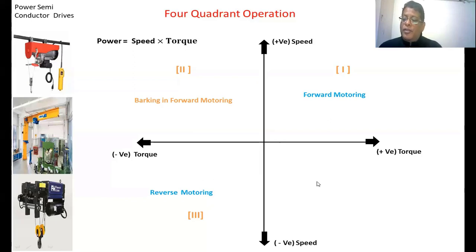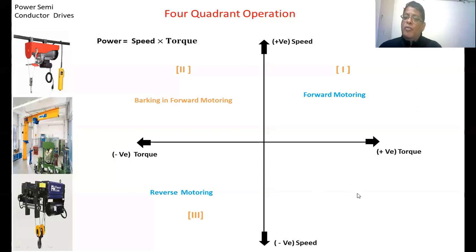In the fourth quadrant, torque is positive whereas speed is negative. The power becomes negative, meaning the motor is giving power back to the supply, which represents braking in the reverse direction.